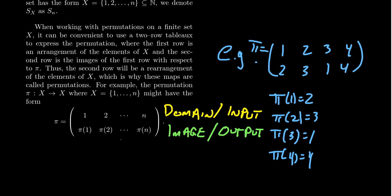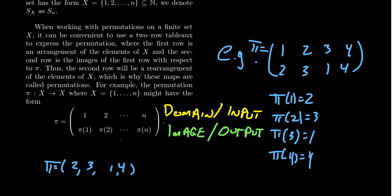Since the function is bijective, you're going to have the exact same number of things on top and bottom — the bottom row is just the domain scrambled up. Some people represent permutations by only writing the bottom row, so you might just write 2, 3, 1, 4. The first number maps to 1, the second to 2, etc. This works well as long as there are no multi-digit numbers, though commas can be added if needed.